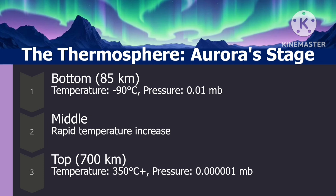Another layer of the atmosphere is the thermosphere, where the aurora borealis is located. It starts at 85 kilometers with a temperature of negative 90 degrees Celsius and pressure of 0.01 MB. It features rapid temperature increase, reaching up to 700 kilometers at the top, with temperatures reaching 350 degrees Celsius or more and pressure of 0.0001 MB.